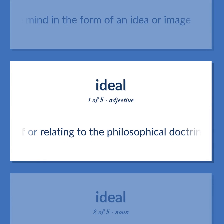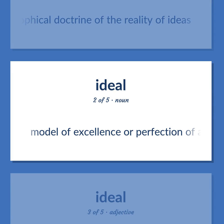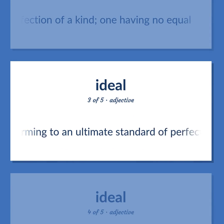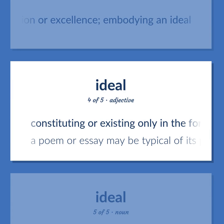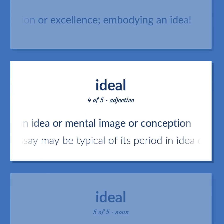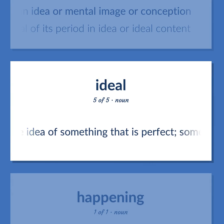Ideal: of or relating to the philosophical doctrine of the reality of ideas. Model of excellence or perfection of a kind; one having no equal. Conforming to an ultimate standard of perfection or excellence; embodying an ideal. Constituting or existing only in the form of an idea or mental image or conception — 'A poem or essay may be typical of its period in idea or ideal content.' The idea of something that is perfect; something that one hopes to attain.